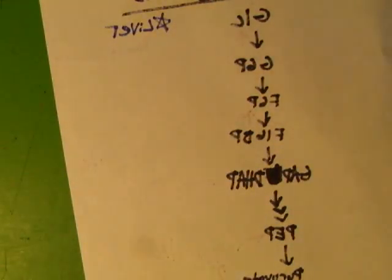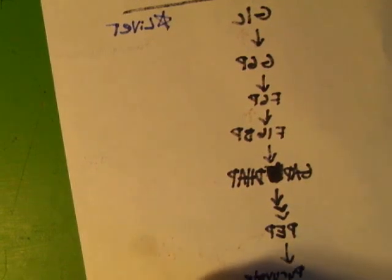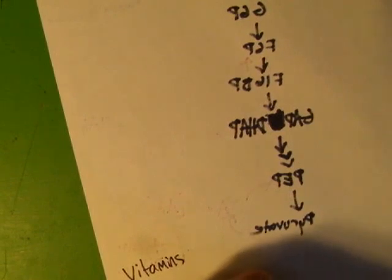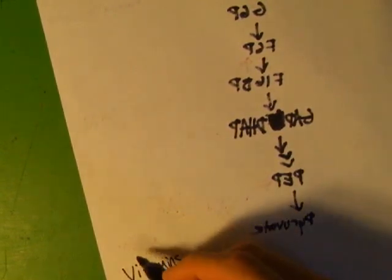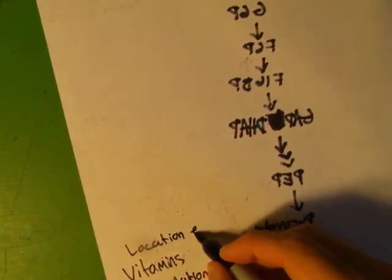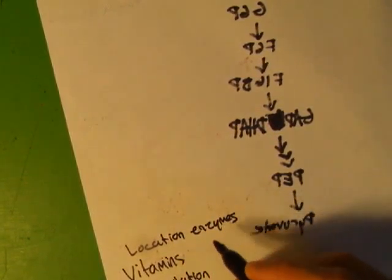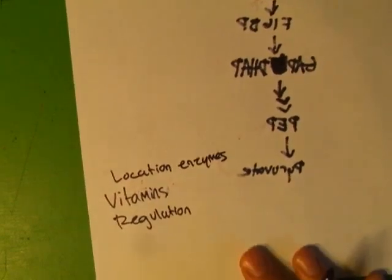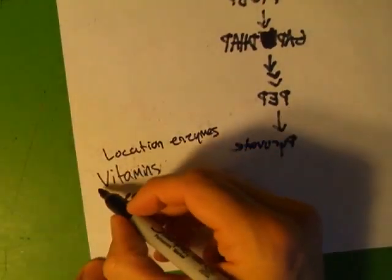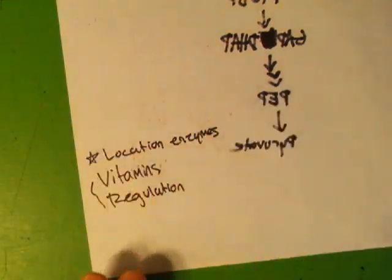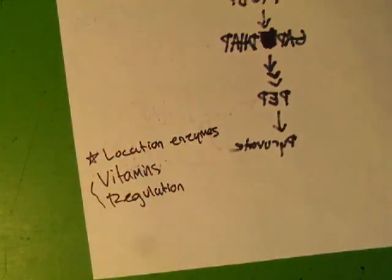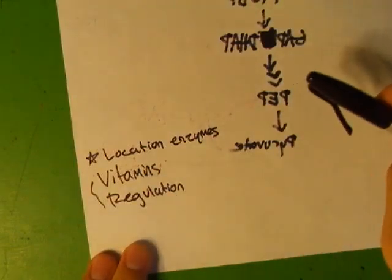The things to focus on this unit I was looking through the old test and pretty much all of the questions are about the vitamins and the regulation. And there's a little bit about the location of the enzymes. So when you're studying I would say these are your top two priorities but know this as well. Literally I think 90% of the questions were about these two for the gluconeogenesis section.